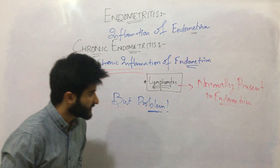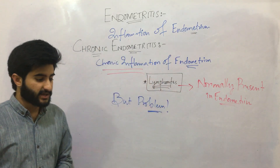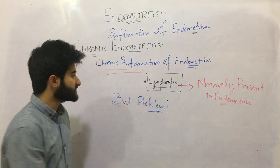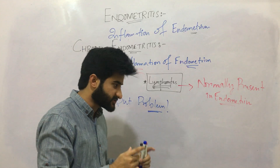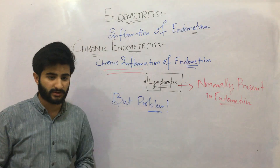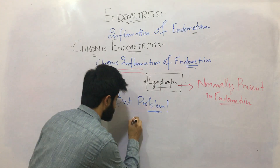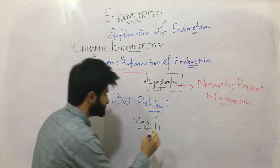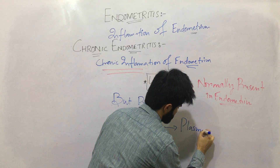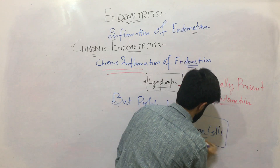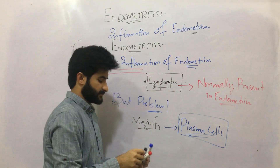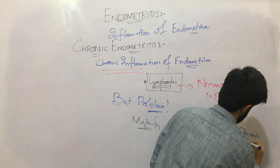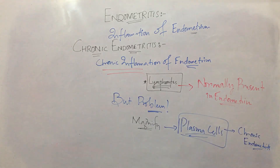Lymphocytes are also normally present in the endometrium because in the endometrium, as we know, there are cyclical changes, and when there is shedding of the endometrium there is some inflammation, and lymphocytes will naturally be present. So by seeing just lymphocytes, we will not be able to say that it is chronic endometritis. If we magnify, we will also be able to see plasma cells, and when plasma cells are visible, we will be able to definitively say that this is chronic endometritis.